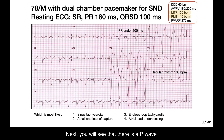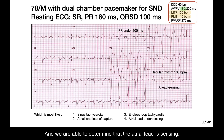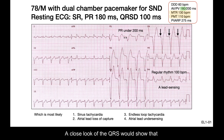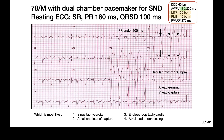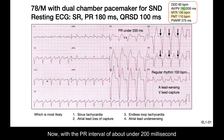Next, you will see that there is a P wave with a PR interval of less than 200 milliseconds, and we are able to determine that the atrial lead is sensing. A close look at the QRS would show that there is a pacing spike in front of every QRS, indicating the ventricular lead is capturing.